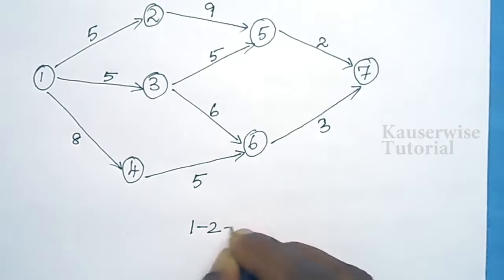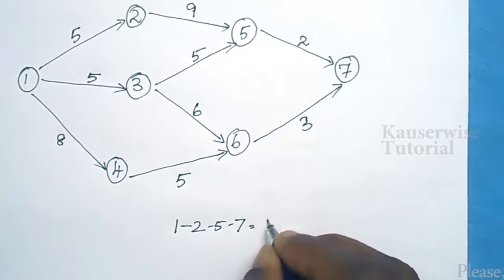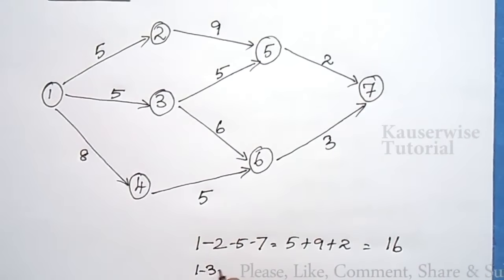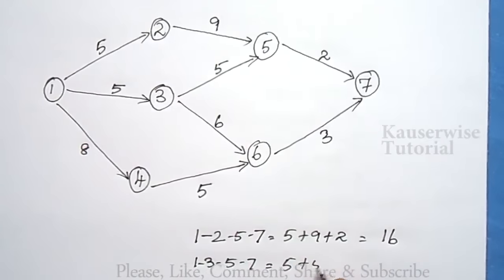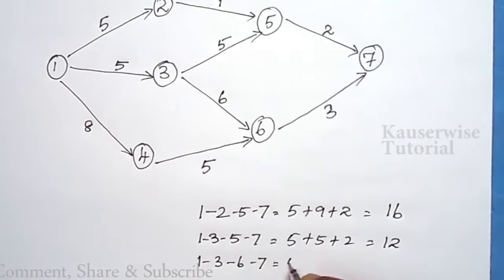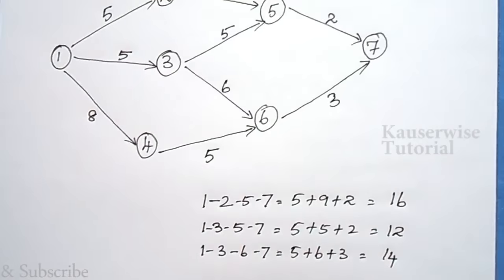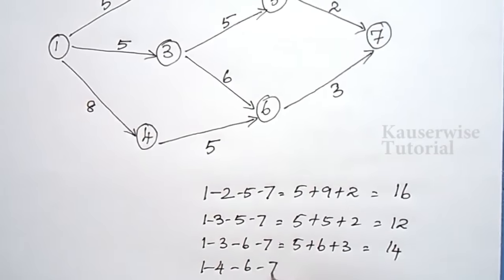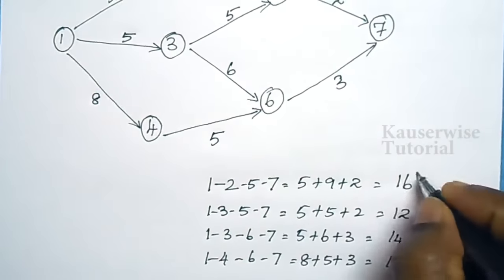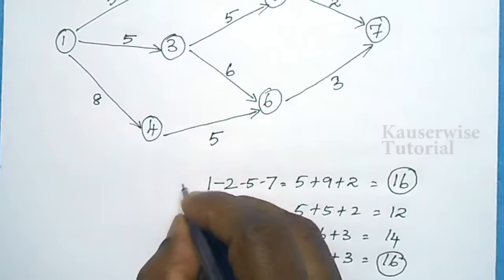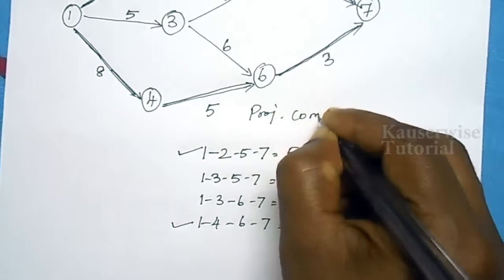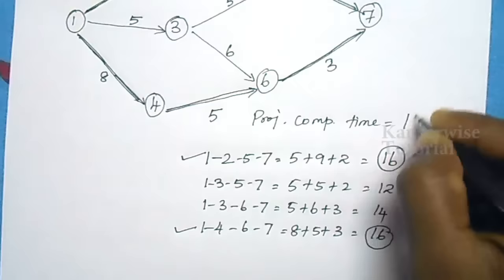Find the critical path again. The four possibilities are: 1→2→5→7: 5+9+2 = 16 weeks; 1→3→5→7: 5+5+2 = 12 weeks; 1→3→6→7: 5+6+3 = 14 weeks; 1→4→6→7: 8+5+3 = 16 weeks. Again we have two critical paths with 16 weeks each. The total project completion time is 16 weeks.